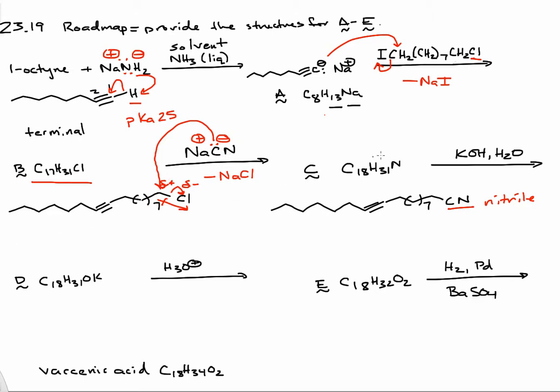In this next step, we're treating the nitrile with potassium hydroxide in water. This is going to be a hydrolysis. If we compare the molecular formula of C with that of D, we can see we are losing the nitrogen. We are adding two oxygens and a potassium. This is going to hydrolyze the nitrile into a potassium carboxylate.